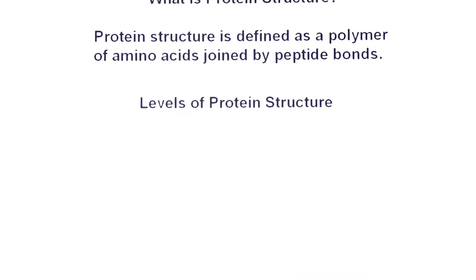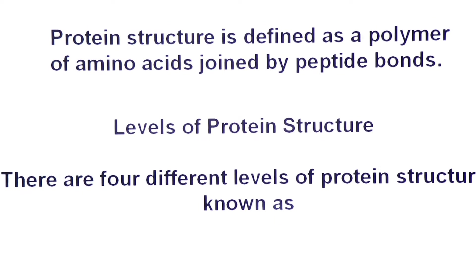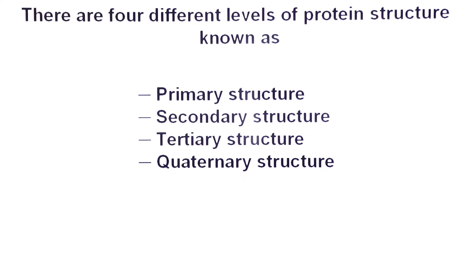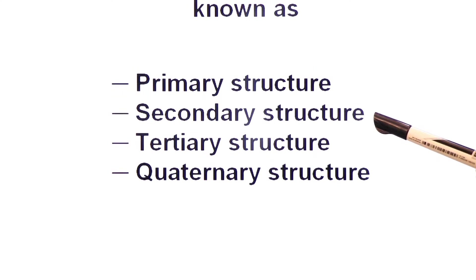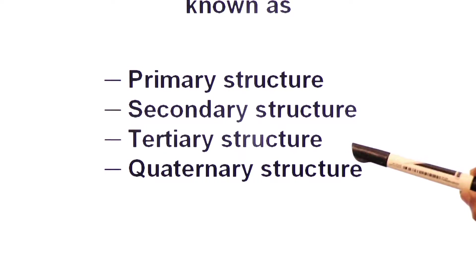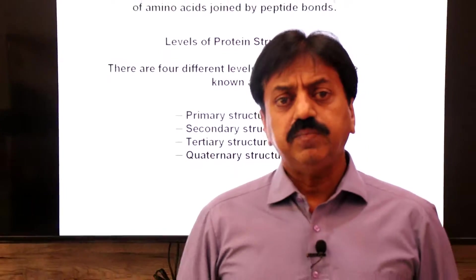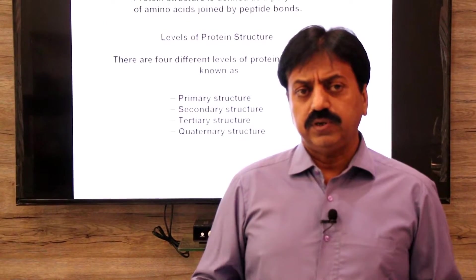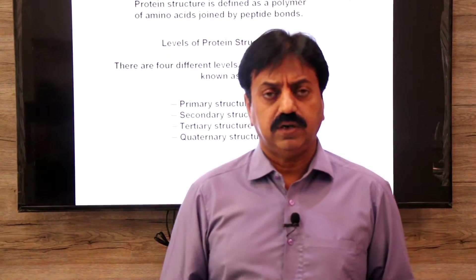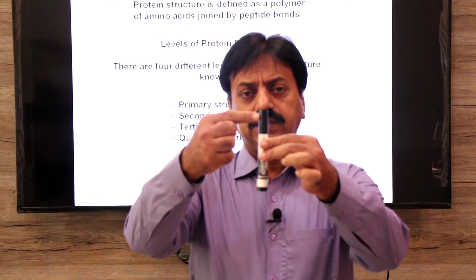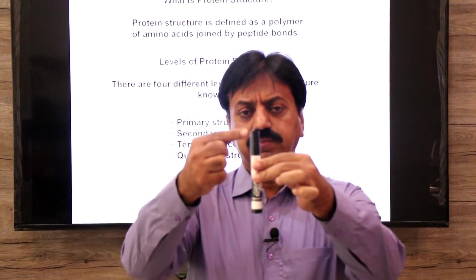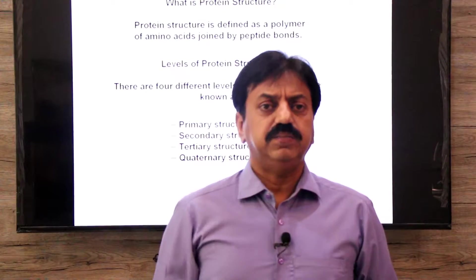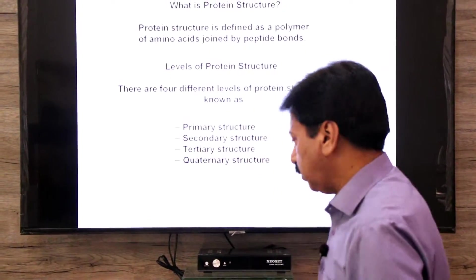Now, what are the levels of protein structure? There are 4 different levels of protein structure: primary structure, secondary structure, tertiary structure, and quaternary structure. When the process of protein synthesis occurs on ribosomes, the first chain that forms is a completely straight chain containing peptide bonds. This linear sequence — the straight arrangement of amino acids — is called the primary structure of proteins.